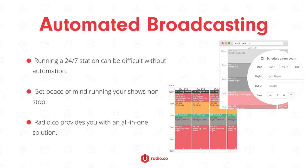Once you have your station equipment set up, it can be challenging to keep it going live non-stop throughout the week — especially in the long run. That's where automation can come in handy. Package up your shows or grab individual tracks and upload them to Radio.co. Organise your media into playlists and schedule them throughout the day, week, or even month. Automation gives you peace of mind knowing your station is running non-stop, handled by a team of radio experts.